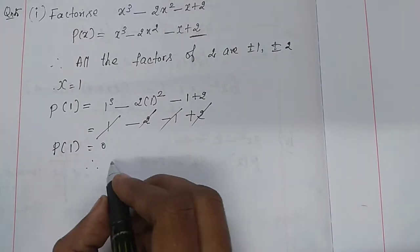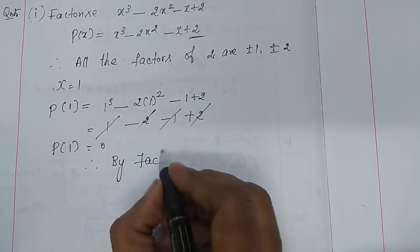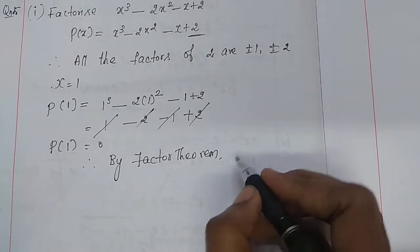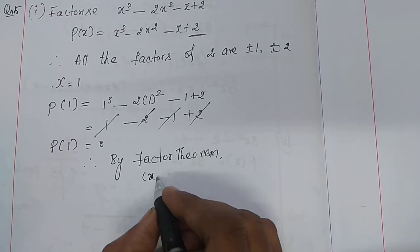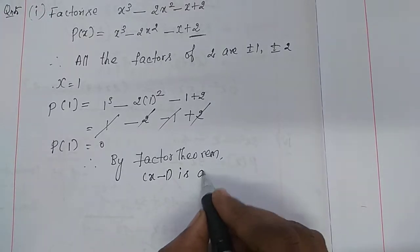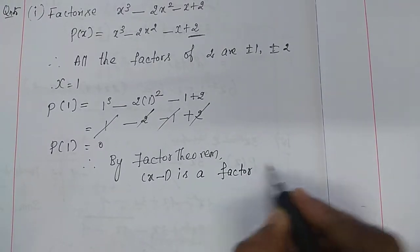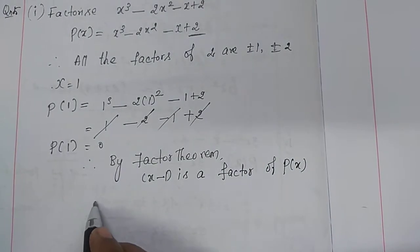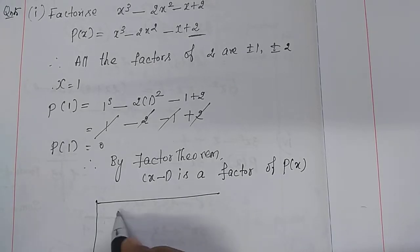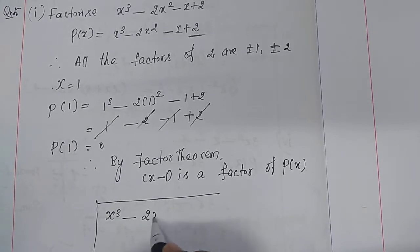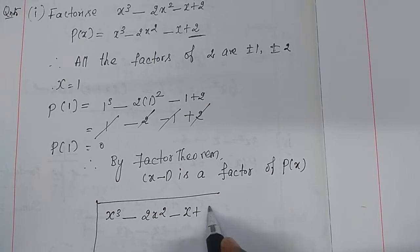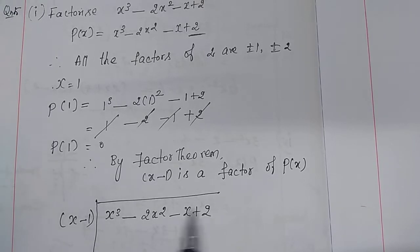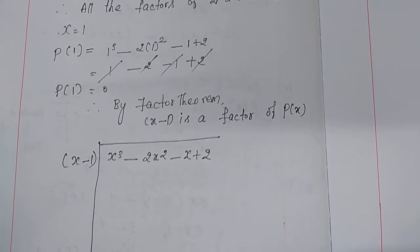Therefore, by factor theorem, we can say that x minus 1 is a factor of this P of x. So, put the long division: x cube minus 2x square minus x plus 2. Now, x minus 1 is the divisor. The given polynomial is the dividend. Do the long division.